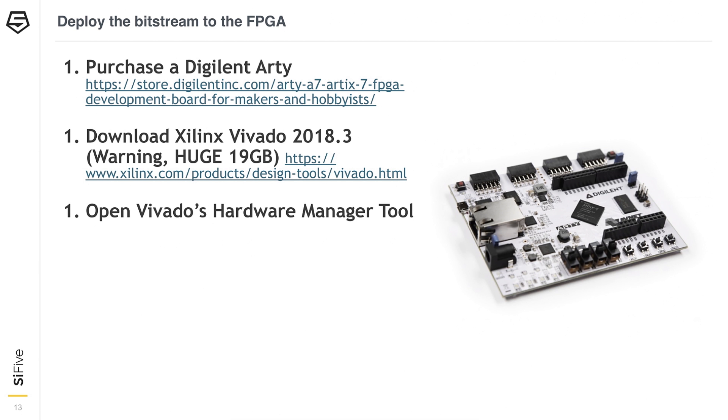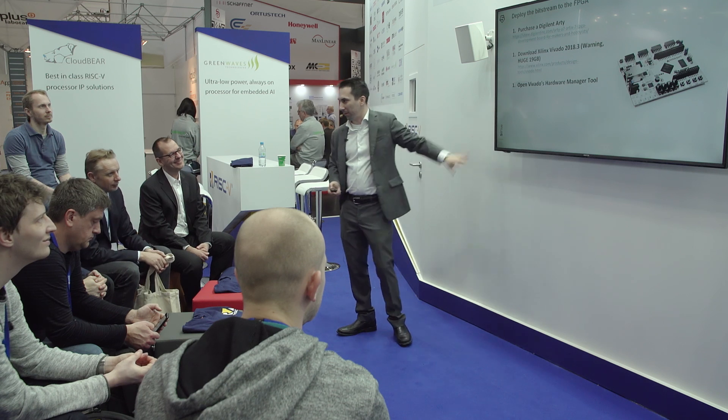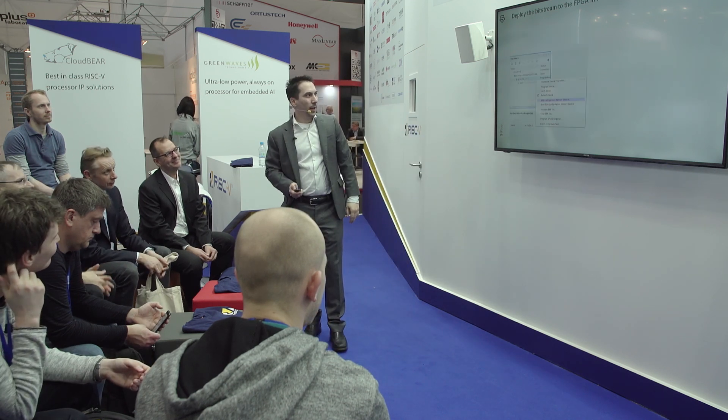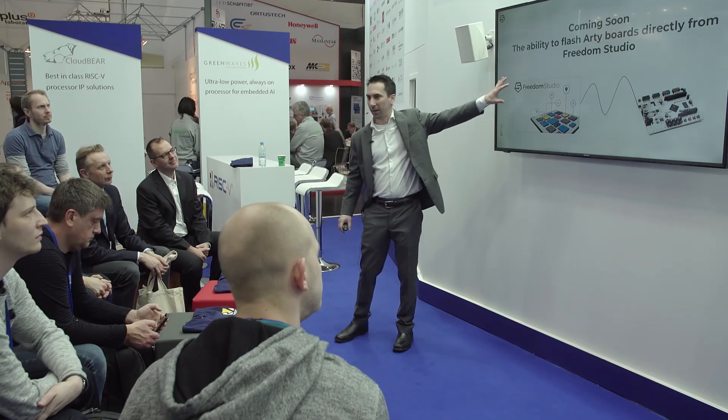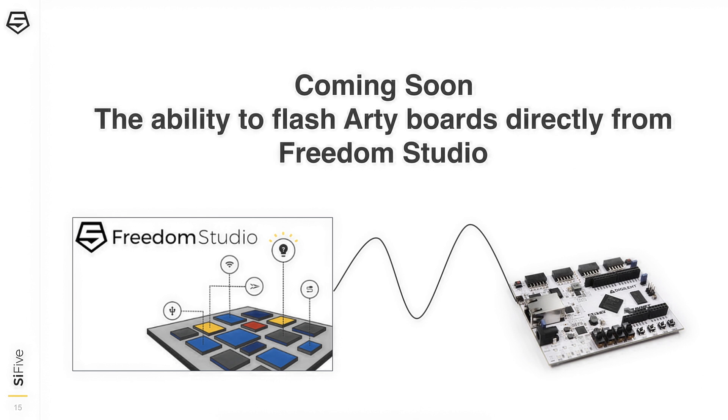Since it's a Xilinx FPGA, you use a Xilinx tool called Vivado to flash it. Vivado is a great tool, but essentially we're just using it to flash the FPGA. Currently you have to download a 19-gigabyte file to do this. You open the Xilinx tool, go through some menus, and download the bitstream. But coming soon, we'll be able to do this directly from Freedom Studio — our integrated software development environment — and the 19-gigabyte download won't be necessary anymore.